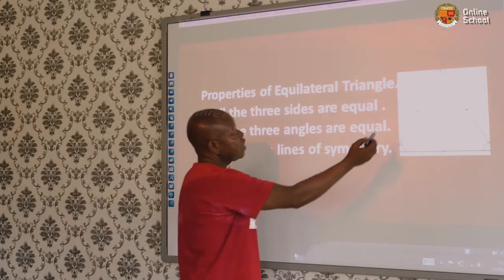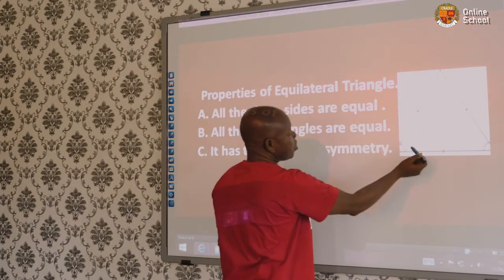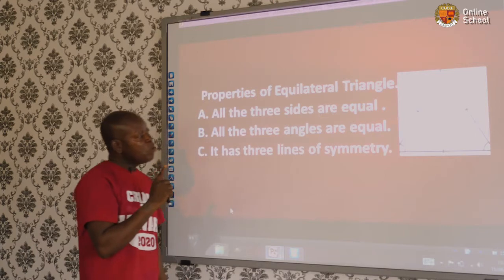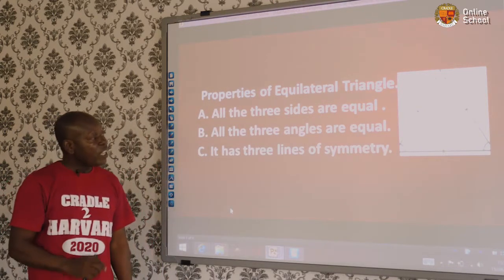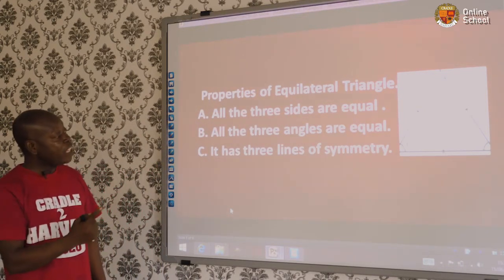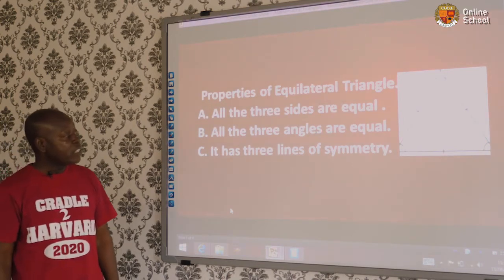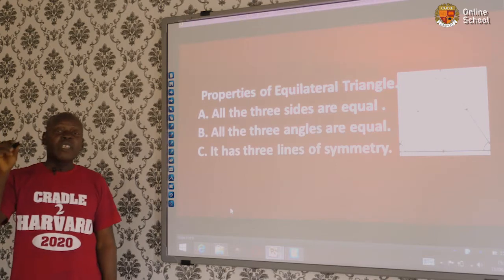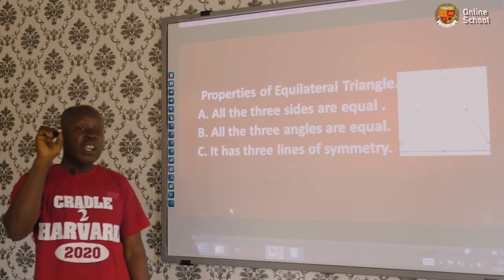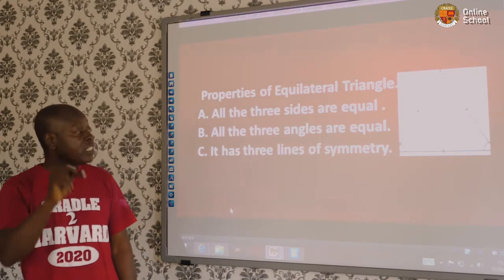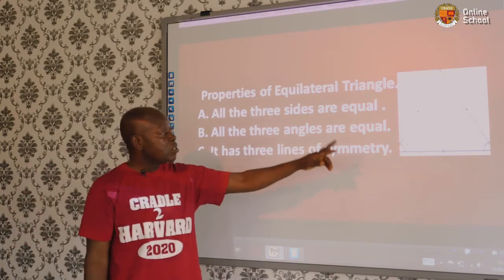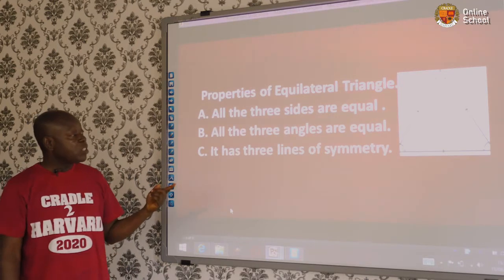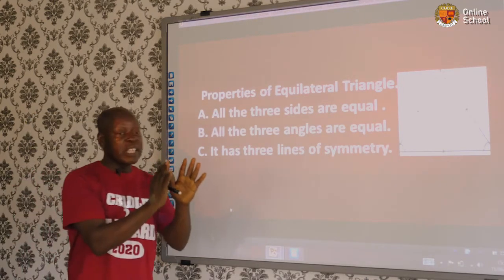Each angle of an equilateral triangle is 60 degrees. When you add them together, it gives you 180. That brings us to the rule that the sum of angles in a triangle is 180 degrees. The equilateral triangle has three lines of symmetry, meaning you can fold it three times.